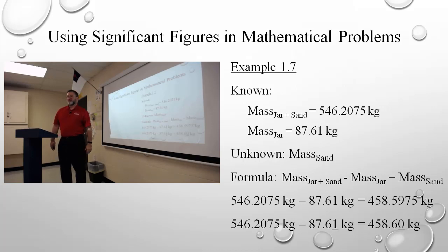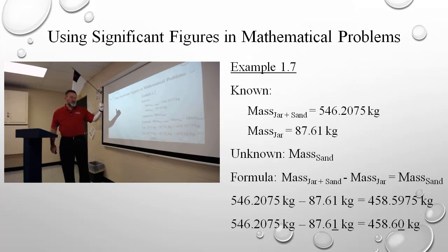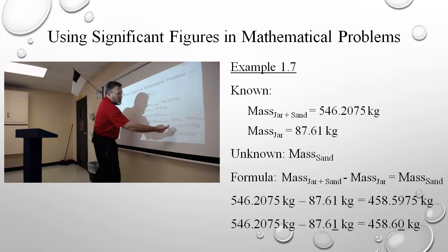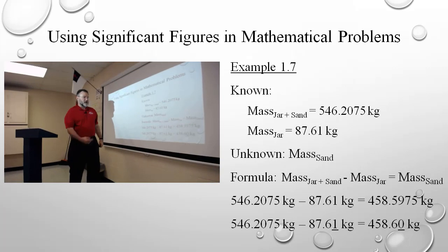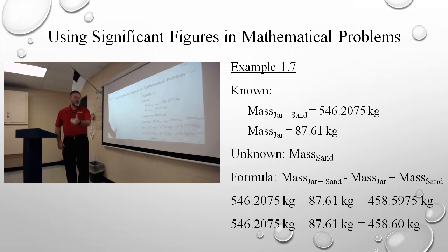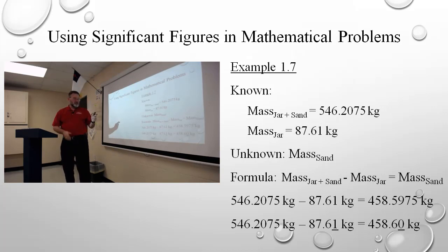Any more than that, I'm lying — I don't have the authority to make that stuff up. My answer, because it's subtraction, can only be as precise as the least precise. In this case, the least precise is my 87.61 — precise to the hundredths place. Therefore, my answer has to be to the nearest hundredths place. I look at 458.5975; I look to the hundredths place — it's a nine. I look to the right: is it five or higher? Yes. I round it up. My nine becomes a zero, which means I kick the five up to a six. It has to be 458.60 — zero — because the least precise factor was to the hundredths place. Your answer has to be to the hundredths place.